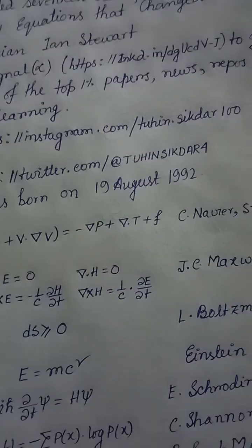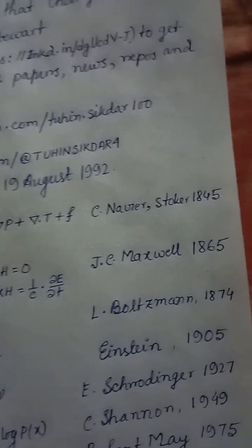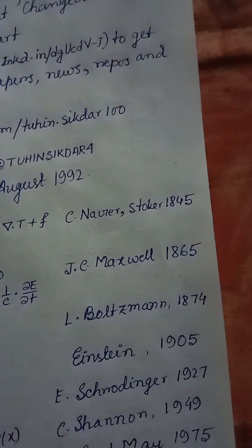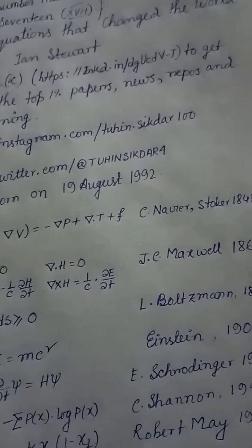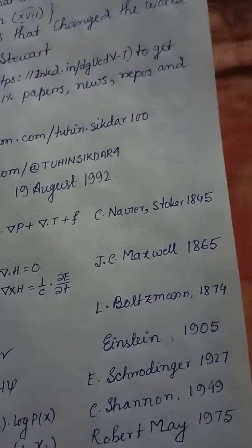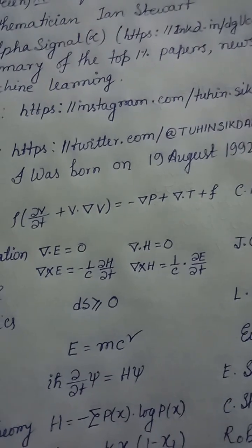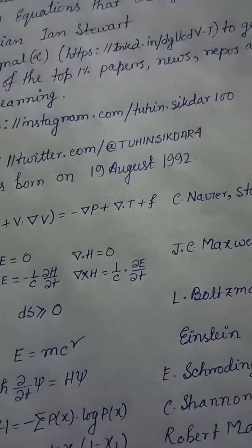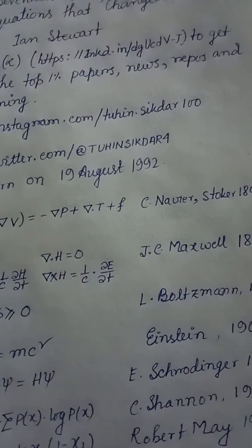Equation 12: Second law of thermodynamics — dS ≥ 0, Boltzmann, 1874. Equation 13: Relativity — E = mc², Einstein, 1905. Equation 14: Schrödinger equation — iℏ·∂ψ/∂t = Ĥψ, Schrödinger, 1927.